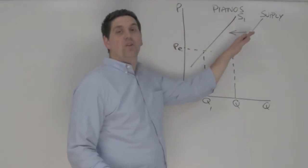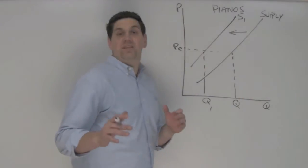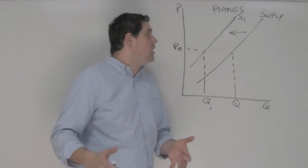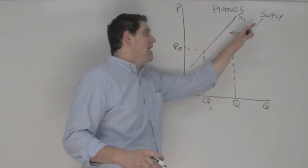Answer B would shift the supply curve to the right. If there's an increase in productivity, that would be an increase in supply. Answer C would also cause that to happen. If there's a decrease in the price of the resources and the parts to make pianos, that would increase the supply.